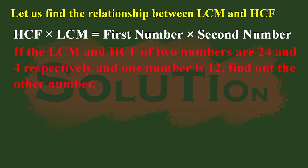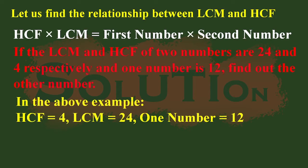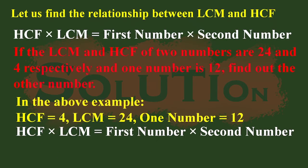Let us understand this concept with an example. If the LCM and HCF of two numbers are 24 and 4 respectively, and one number is 12, find the other number. Here HCF is 4, LCM is 24, and one of the numbers is 12. We have to find the other number.